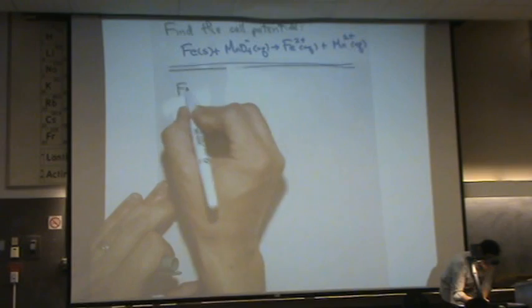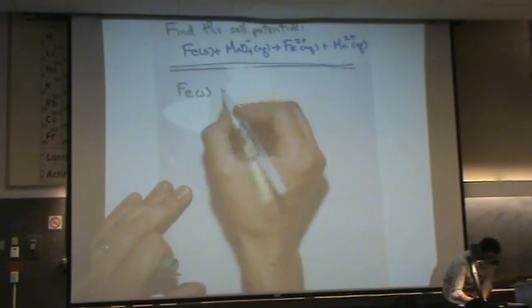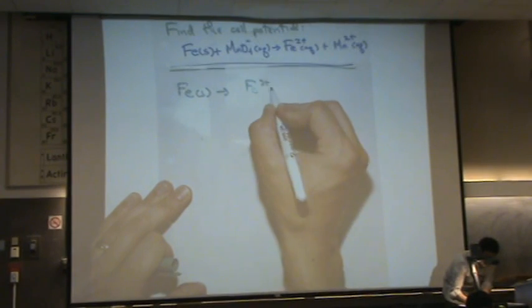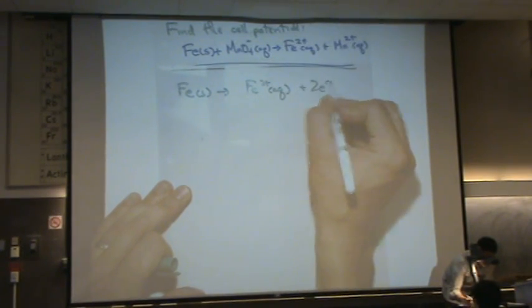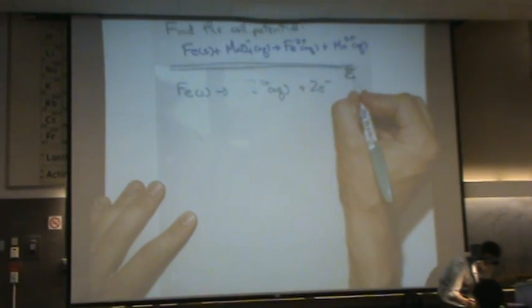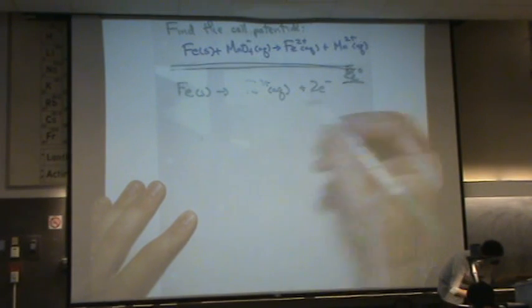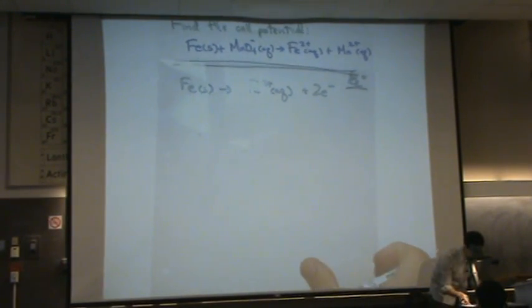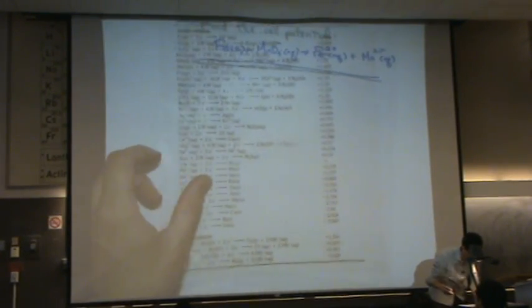We've got iron solid going to iron two plus aqueous plus two electrons. I'm also going to copy down the number, the voltage that goes with it. It's the E squiggly. The E squiggly for the top reaction is, take a look at this. What is it?